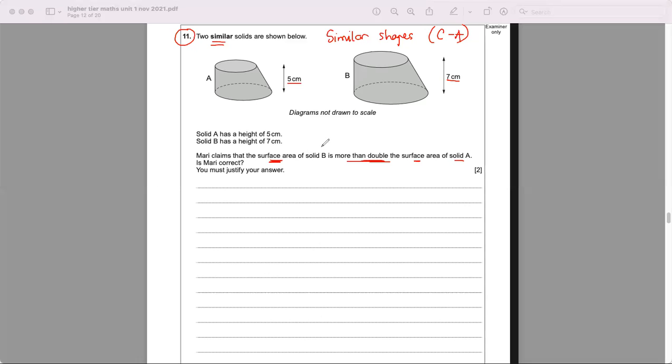Whenever we talk about similar shapes you've got to think about what we call a scale factor, but there are two different types of scale factor. You've got a length scale factor, and you've got an area scale factor and a volume scale factor, and they all link together.